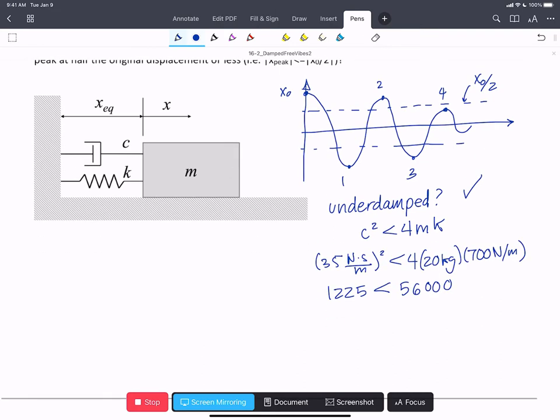So next, we'll draw our free body diagram. We have our block that is moved a distance x to the right. And we note that x, x dot, and x double dot have to be assigned in the same direction. So they'll all be positive to the right.